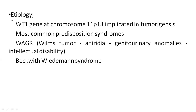Discussing etiology, the WT1 gene is mainly implicated in the tumorigenesis of Wilms tumor. WT1 is located on chromosome 11p13. The syndromes that predispose to Wilms tumor include WAGR syndrome, which encompasses Wilms tumor, aniridia, genitourinary anomalies, and intellectual disabilities.